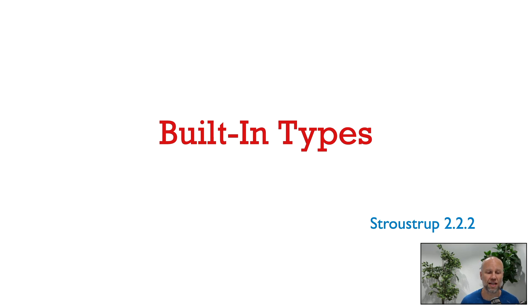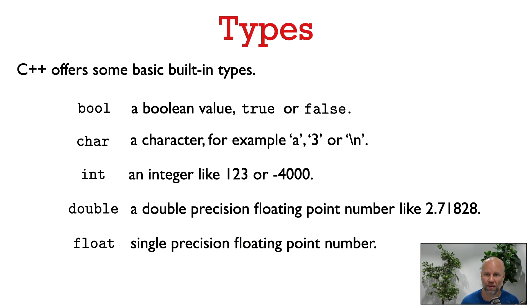Now we're going to discuss built-in types in C++, and this material follows section 2.2.2 of Stroustrup. C++ offers some basic built-in types. No library needs to be included in order to use these types. This is not an exhaustive list of all the built-in types in C++, but these are the main ones that we're going to encounter in this course.